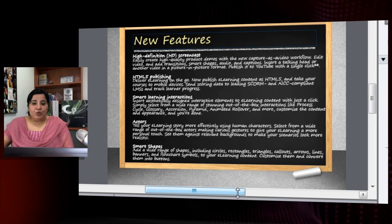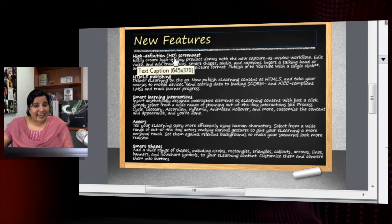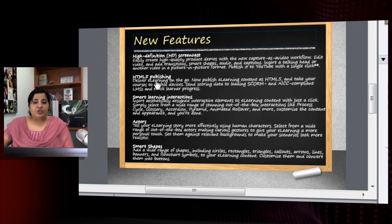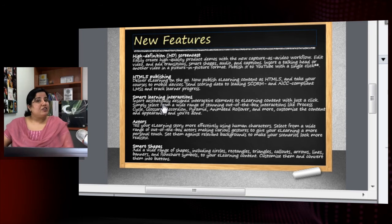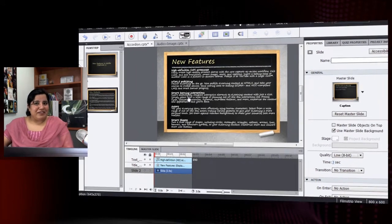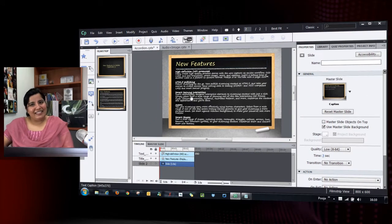Because they have to go through all of this on one screen, we need a solution where learners can click on a button and get information related to each of these points one by one — not all at once. A solution for this is to add an accordion interaction using Captivate 6. Let's see how we can add an accordion easily into a course.